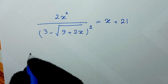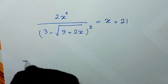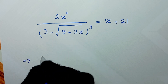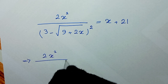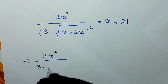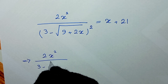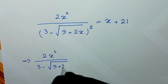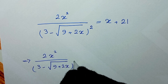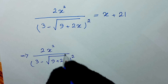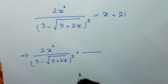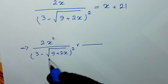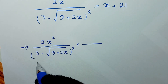In the first step we write: 2x² over (3 minus square root of 9 plus 2x) to the power of 2. To rationalize this fraction, we multiply numerator and denominator by the conjugate of the denominator.